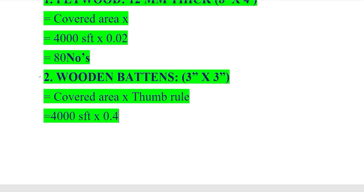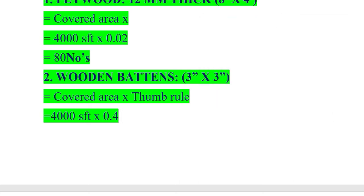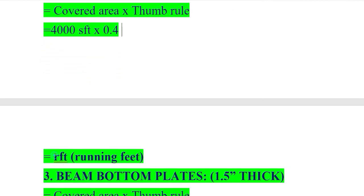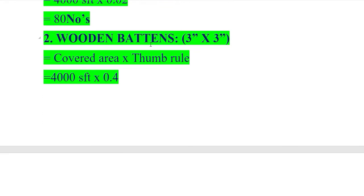Next we have wooden battens, size 3 inch by 3 inch. Covered area is 4000 square feet, and the thumb rule for wooden battens is 0.4. Calculating: 4000 × 0.4 = 1600. So we require 1600 running feet of wooden battens. These are calculated in running feet because they are small in size.